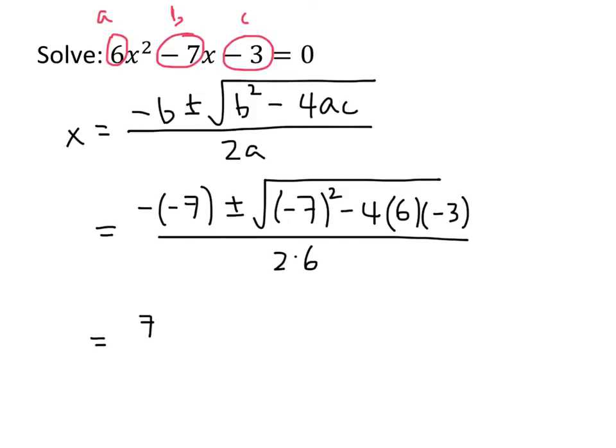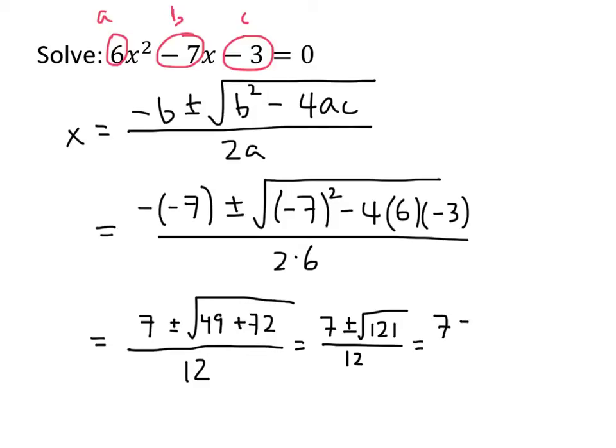So minus minus 7 is positive 7. Under the square root there, 7 squared is 49. We've got minus 4 times 6 times minus 3, and that works out to be 72. And then 2 times 6 on the bottom is 12. 49 plus 72 works out to be 121, and the square root of 121 turns out nice. That's just 11. So we've got 7 plus or minus 11 divided by 12.